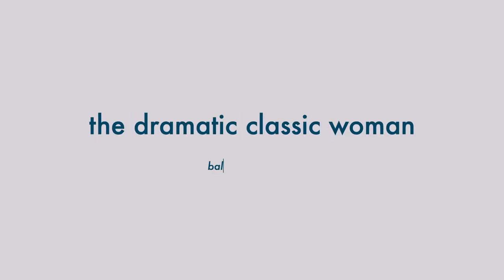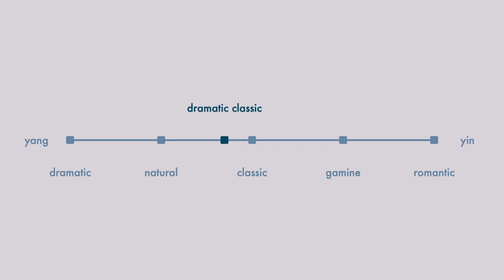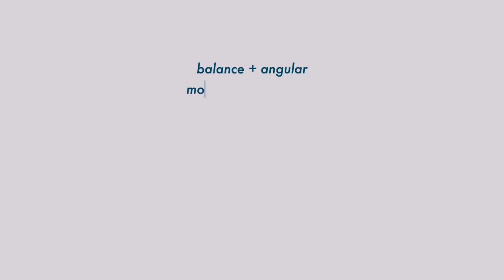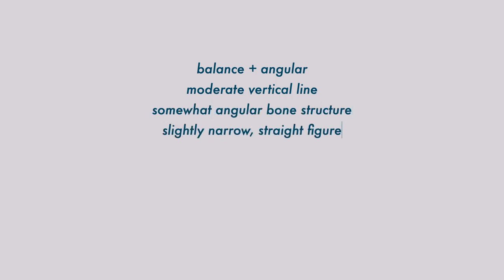Now let's introduce the dramatic classic woman. All of the kibbe body types are primarily described by their unique mix of yin, or feminine traits, and yang, or masculine traits. The dramatic classic woman is a balance of yin and yang with just a bit more yang. She is symmetrical and proportional with a dramatic undercurrent. She has a moderate vertical line and balanced appearance, with a somewhat angular bone structure and a slightly narrow frame.